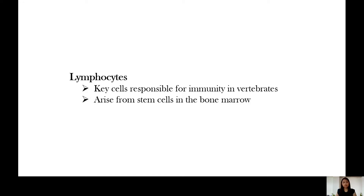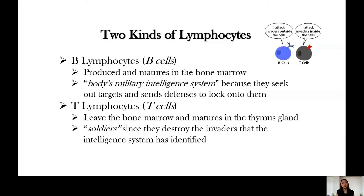Lymphocytes are the key cells responsible for immunity in vertebrates, like us humans. They arise from stem cells in the bone marrow. There are two kinds of lymphocytes: the B cells or B lymphocytes, and the T lymphocytes. B cells are produced and mature in the bone marrow. They are our body's military intelligence system because they seek out targets and send defenses to lock onto them. The B lymphocytes wander around the body.